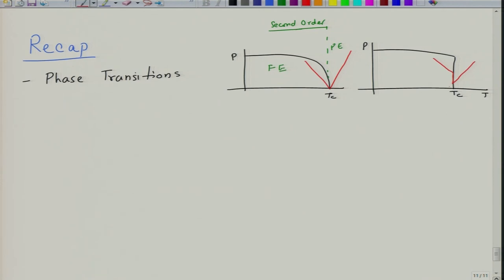In the first order case, the susceptibility of the high temperature region extrapolates back to a temperature T0, and between T0 and Tc we have subsidiary minima in the free energy landscape. This is the ferroelectric region and this is the paraelectric region. This is manifested in the first derivative of free energy being discontinuous, or equivalently entropy being discontinuous.